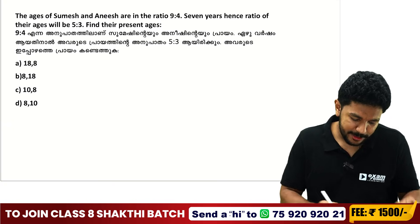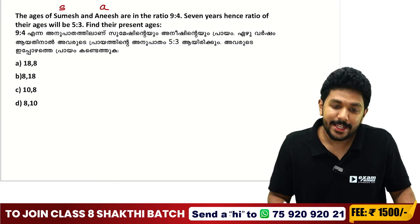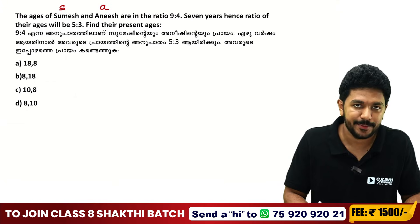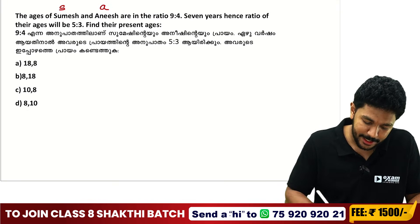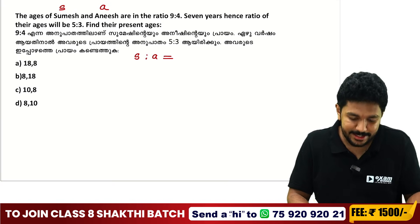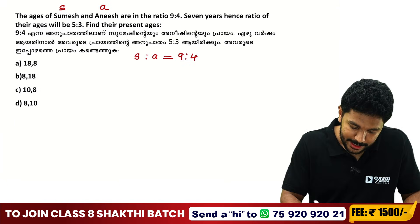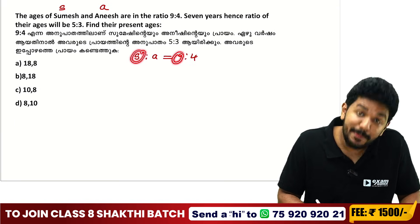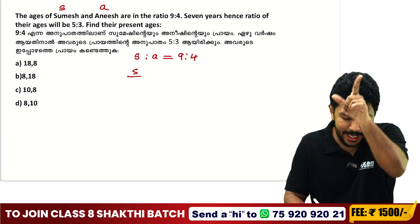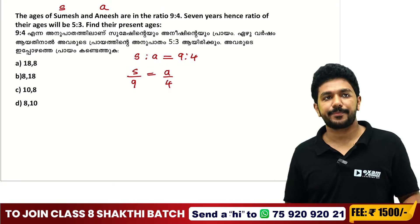How do we approach this? Let Sumesh's age be S and Anish's age be A. Ages are in the ratio 9 is to 4. So S divided by 9 is equal to A divided by 4. This gives us our first equation: 4S is equal to 9A.